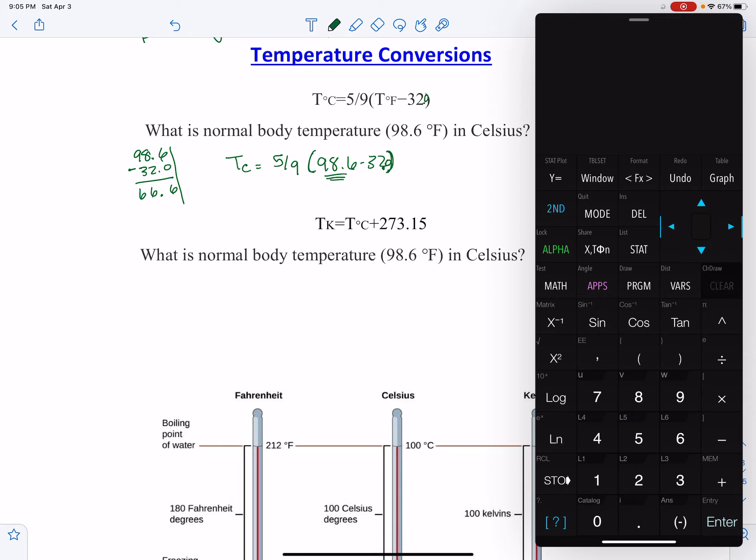So we've got 5 divided by 9 times parentheses 98.6 minus 32.0. So again we've got that extra decimal place in there, 37.0.